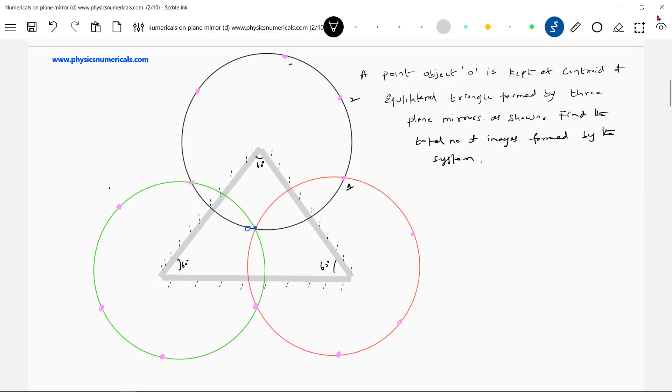One, two, three, four, five, six, seven, eight, nine, ten, eleven, twelve. So number of images, how many will be? Twelve images is what I counted.